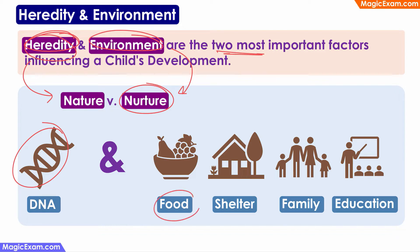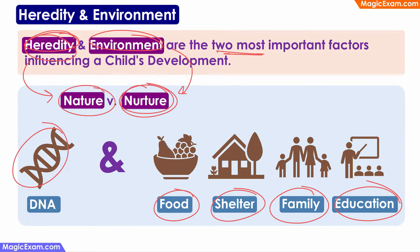Environment, which is nurture, is the type of environment the child is brought up in. It might be the type of food the child is getting, the shelter, the family environment, or the type of education that the child is getting. So these two factors, nature and nurture — that is heredity and environment — interact with each other to affect all the types of development in a child.